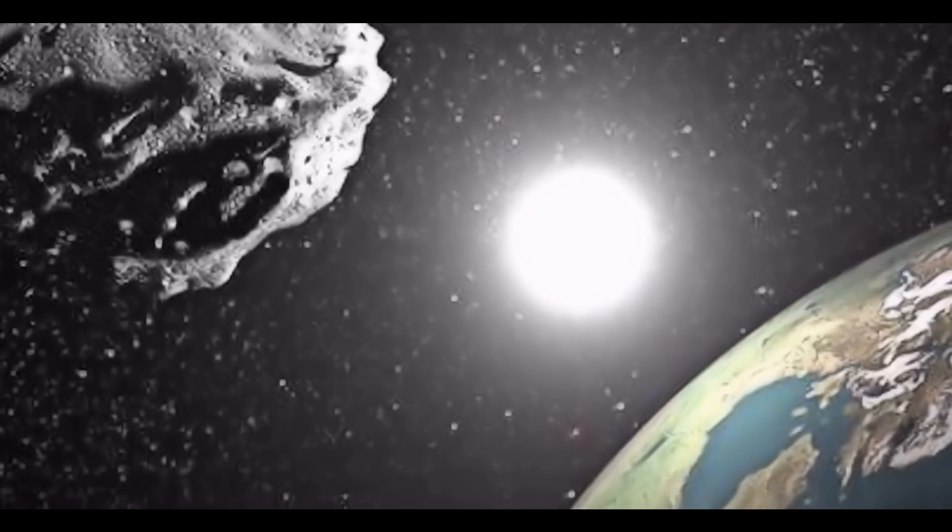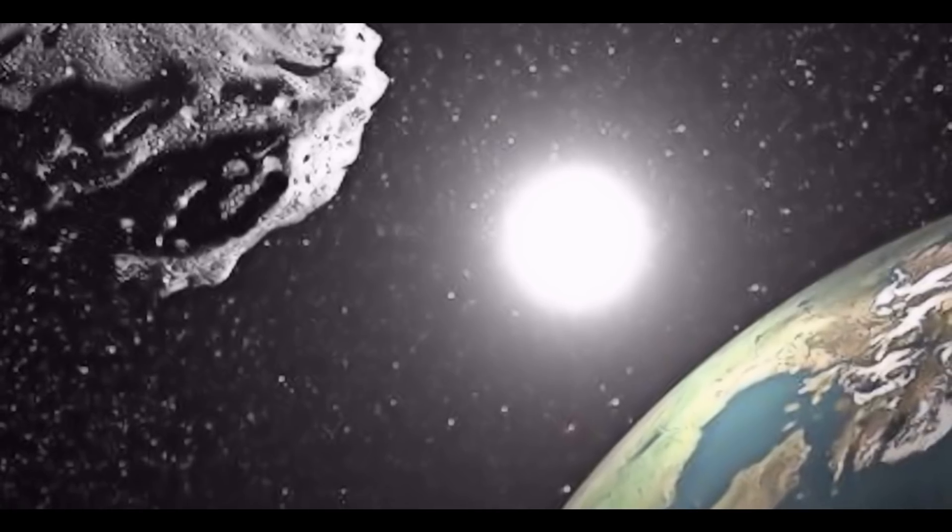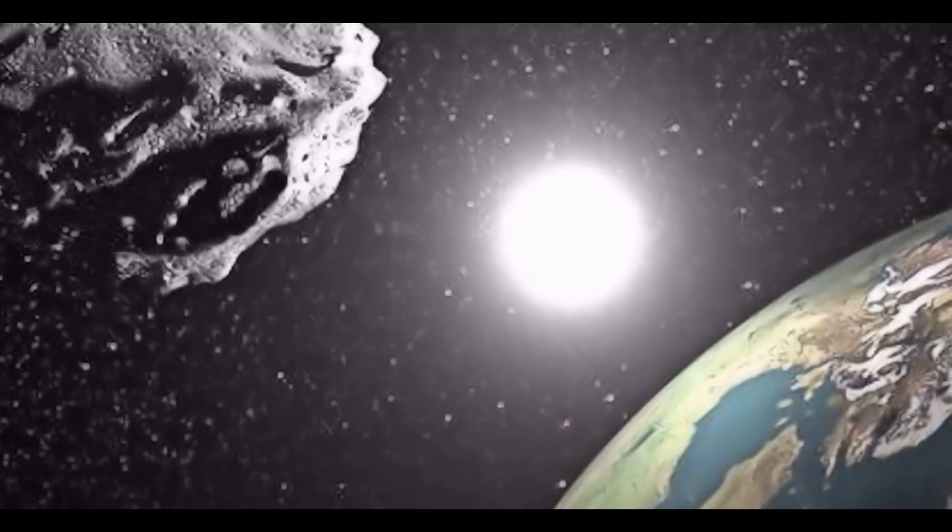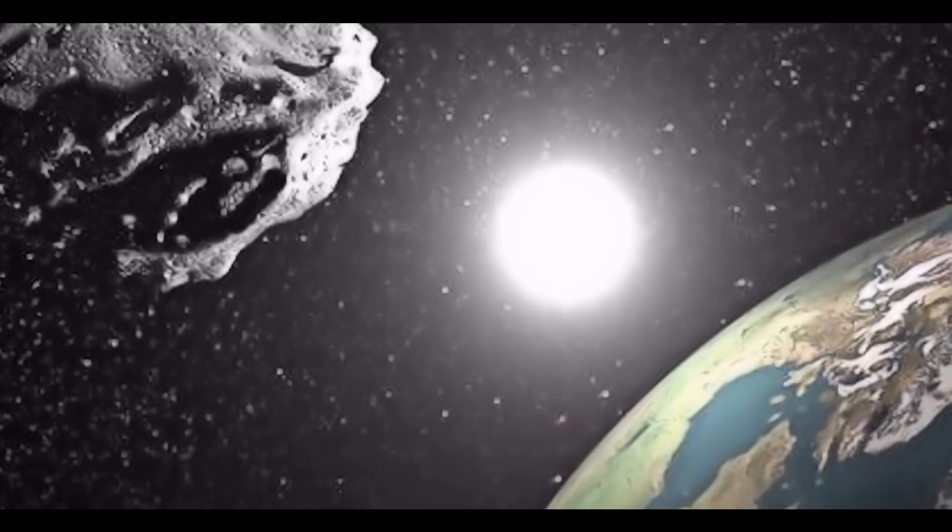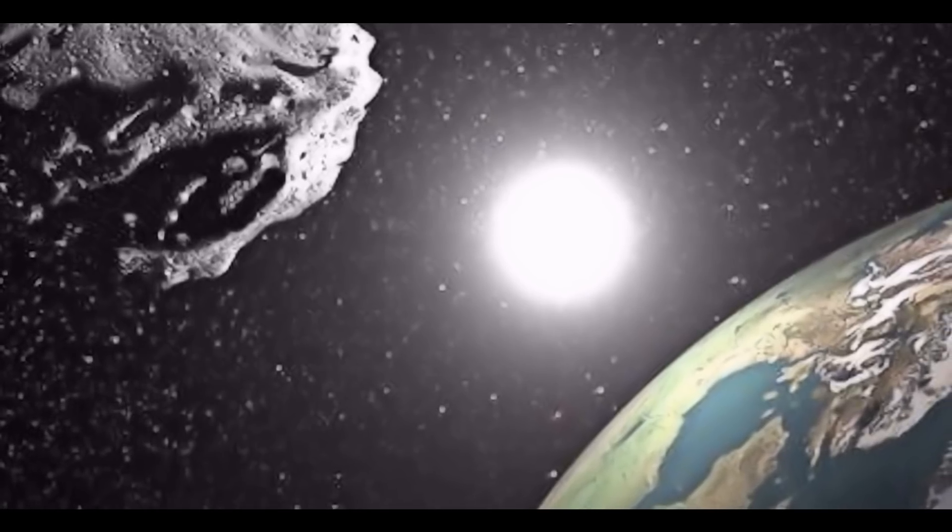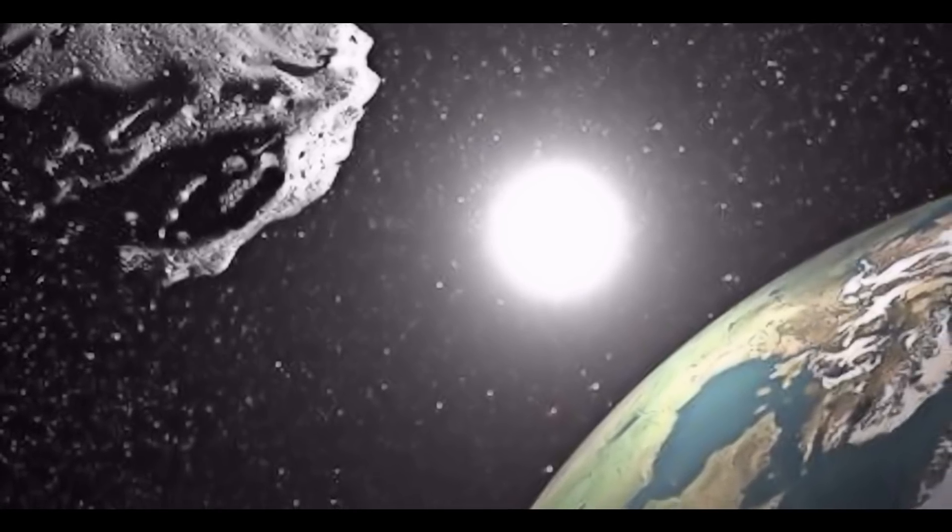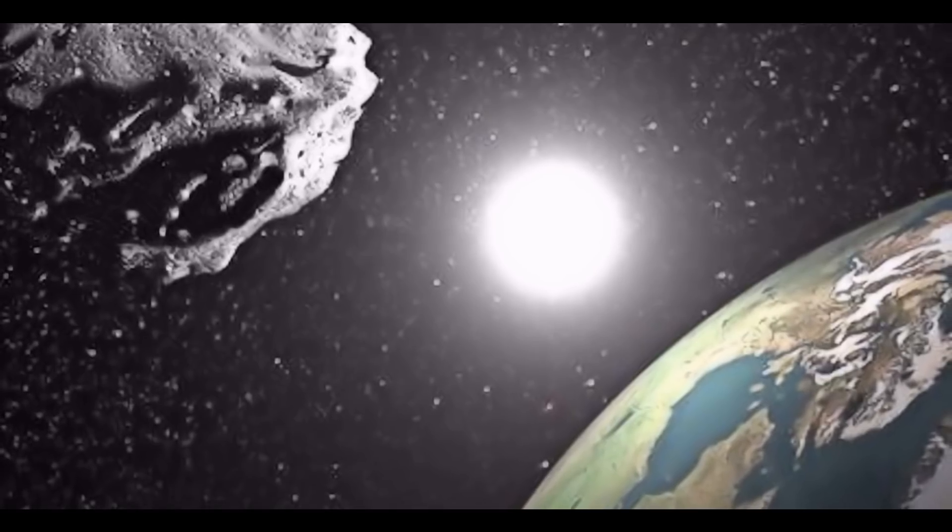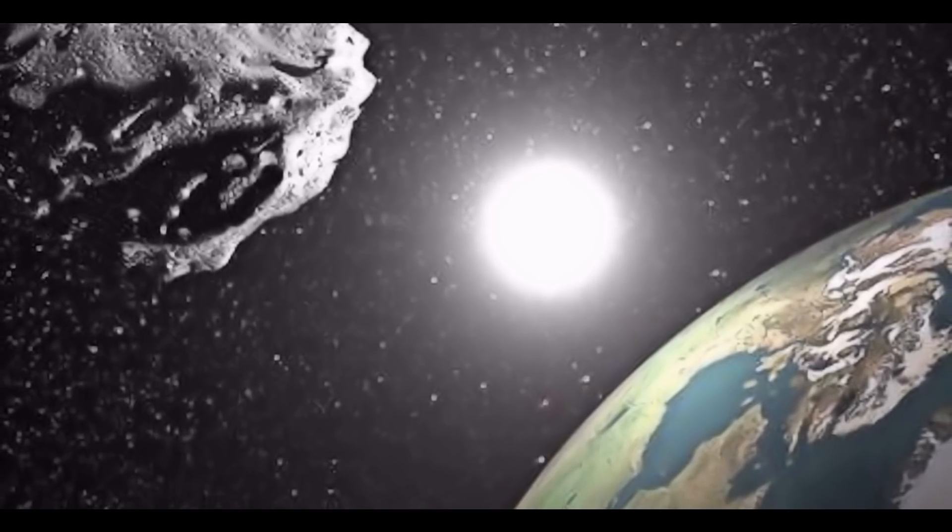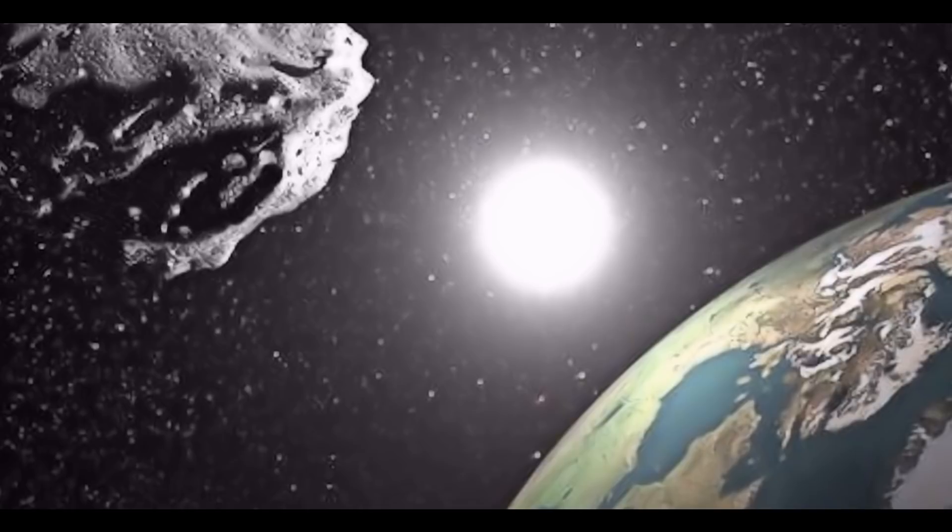The astronomers say that it will pass the planet around 4,184,000 kilometers away. NASA classifies the asteroid as potentially dangerous. This category includes all objects that approach the Earth at less than 7,360,000 kilometers.